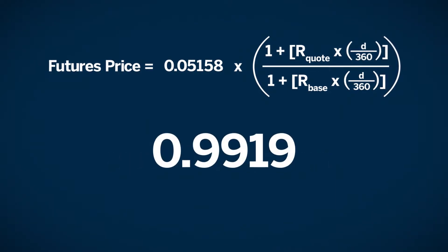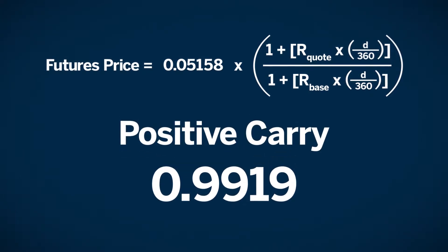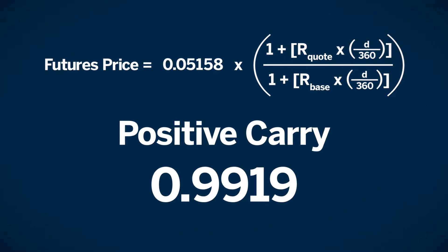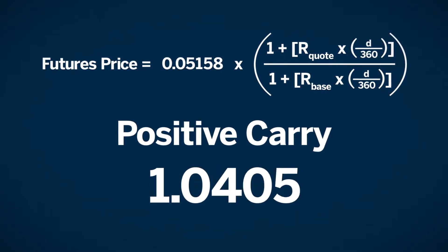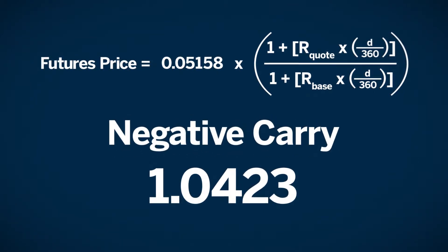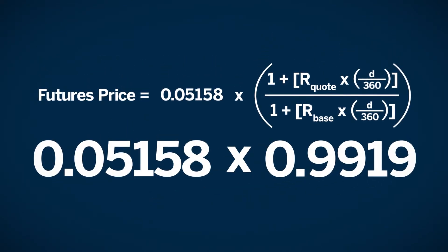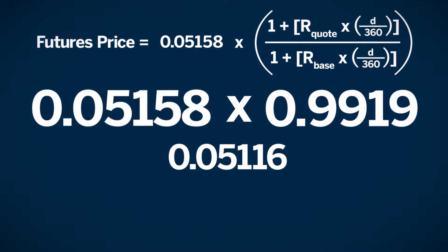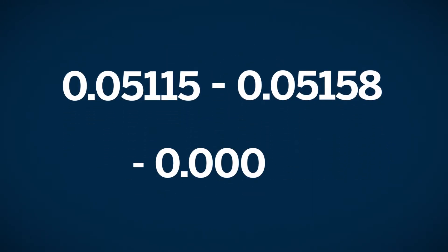Before going on to the next step, notice the resulting multiplier is less than 1. This implies positive carry because it will reduce the futures price relative to the spot rate. If the terms rate was higher than the base rate, the resulting multiplier would have been greater than 1. That would have meant negative carry and futures would price at a premium to spot. Now multiply the spot rate times the multiplier. The result is 0.05116. The basis equals futures minus spot or 0.05115 minus 0.05158, which is a negative 0.00043, or otherwise considered a negative 43 points.